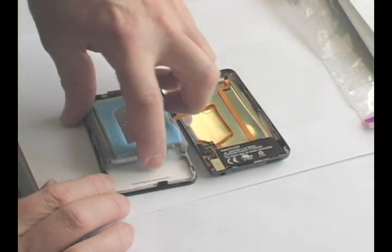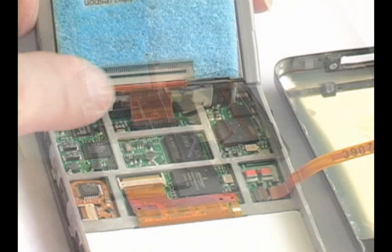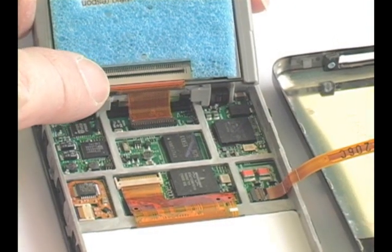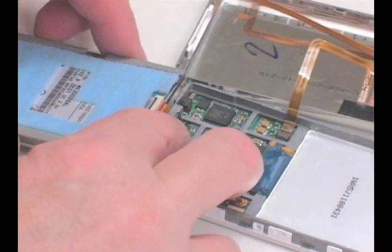Pick up the hard drive and disconnect the cable by flipping up the black tab. Pull the hard drive off of the cable.